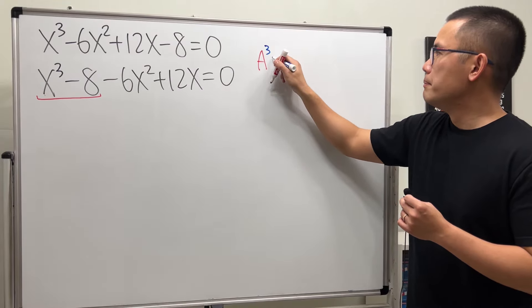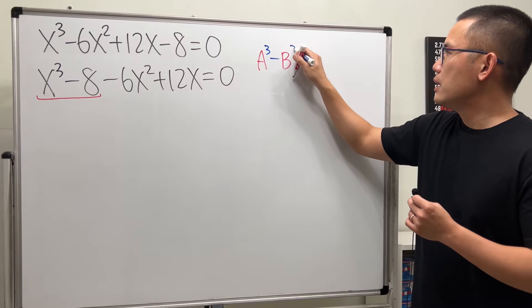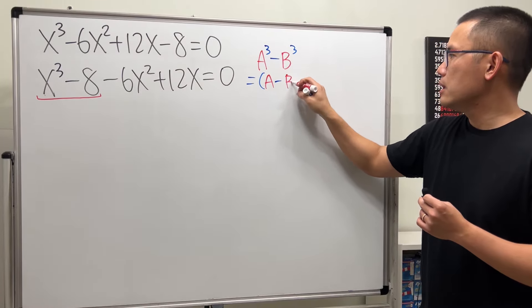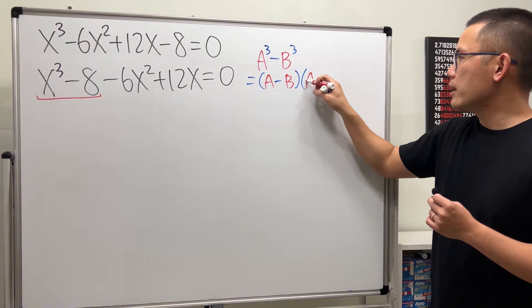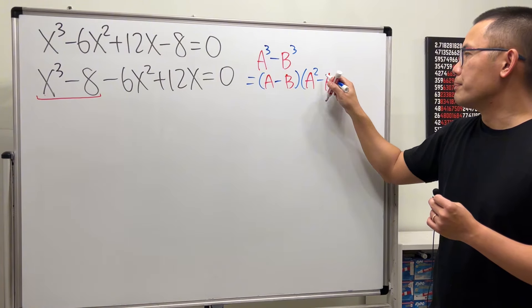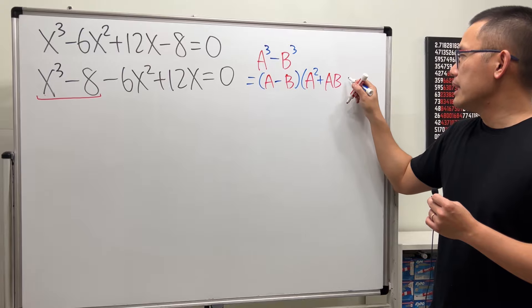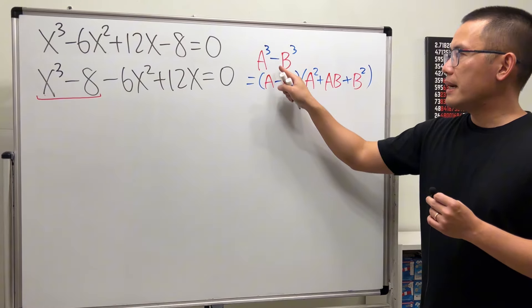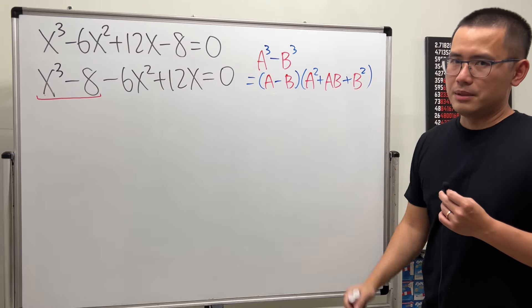A cubed minus b cubed equals parentheses a minus b times a squared plus a times b, and then plus b squared. Minus minus plus, and the last term is always plus.